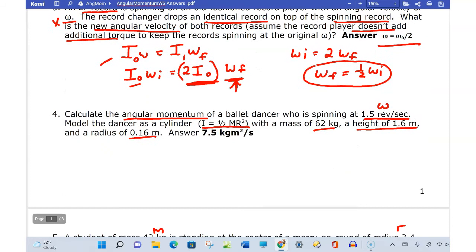Let's try this one number four. Maybe we'll call it quits after this. Let's see. Yeah, it's a good time. The angular momentum of a ballet dancer who's spinning at, here's my ω. So she's got a ω of 1.5. Model the dancer. She's modeled after a cylinder and she has this mass and height and radius. What is her angular momentum?